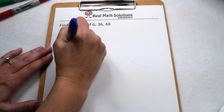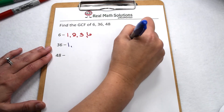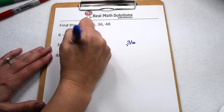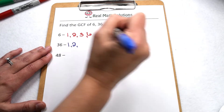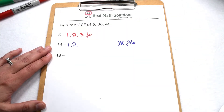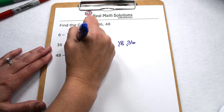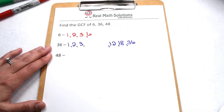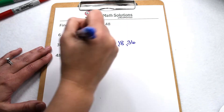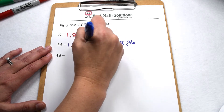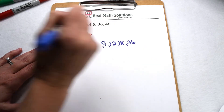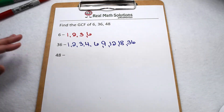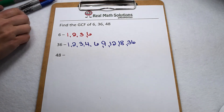For factors of 36, we know we can start with 1 and 36. 36 is even, so that means our list is also going to include 2 and 18. 36 is divisible by 3, so our list is going to include 3 and 12. 36 is also divisible by 4, so there's 4 and 9. And then finally, 6 times 6 is 36, so there our list has met in the middle.